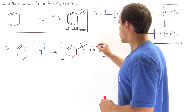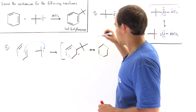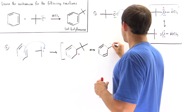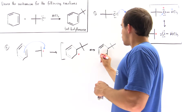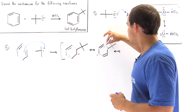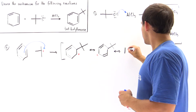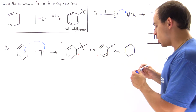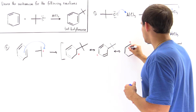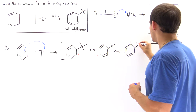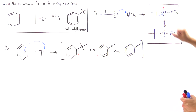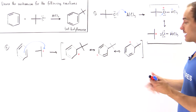Because we have two pi bonds remaining, there will be resonance stabilization — we have three different resonance-stabilized forms. In the first form, the pi bond shifts over, with a pi bond here and the tert-butyl group here, and the positive charge moves to the next carbon. In the final resonance form, the bond moves over again, and the positive charge is delocalized onto another carbon. We see resonance stabilization in this second step.